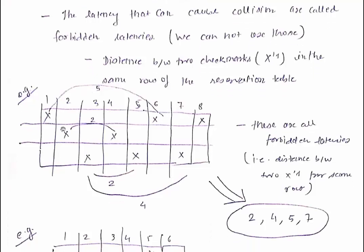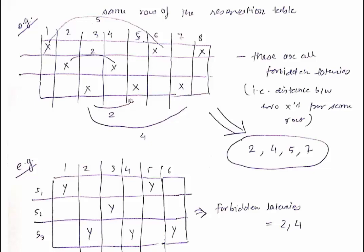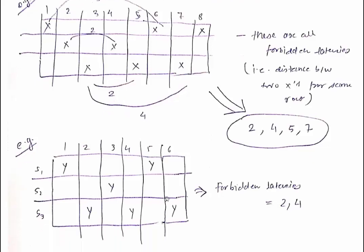Continuing with forbidden latencies: for S2, 4−2=2; for S3, 5−3=2, 7−3=4, 7−5=2, 8−6=2. So the forbidden latencies for function X are 2, 4, 5, and 7. For function Y with six time steps: 5−1=4, 4−2=2, 6−4=2, 6−2=4. So forbidden latencies for Y are 2 and 4. Where there is only one check mark in a stage row, it represents a constant latency, which equals 3 in this case.